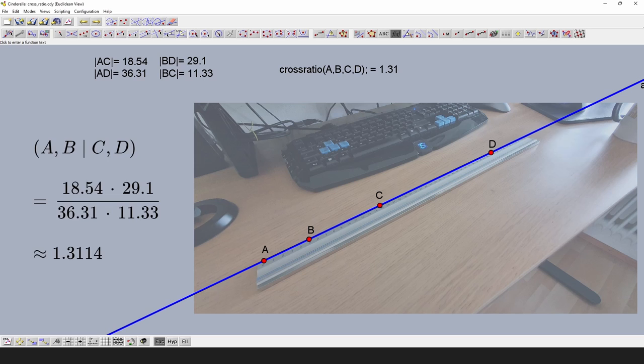The cross ratio we get from them is 1.3114 and ignoring measuring inconsistencies, we see that it's the same as before. If you do this experiment, I encourage you to take photos from various angles and directions and check that it's always the same cross ratio. For completeness, Cinderella has a cross ratio function built in, so we can double check that our example works.